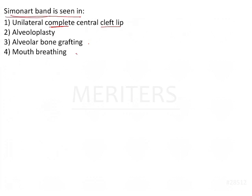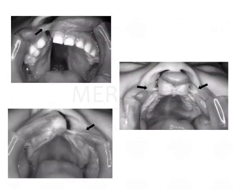What is a Simonard band? Simonard bands are basically soft tissue adhesions or soft tissue connections which are present between the medial and the lateral portions of the cleft. These soft tissue adhesions which join the cleft segments are known as Simonard bands.